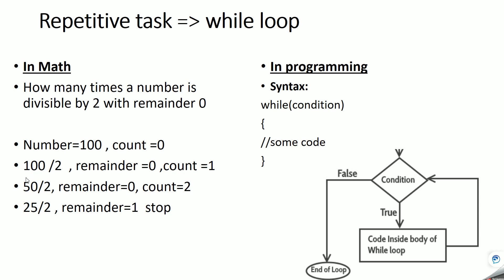Finding the remainder as 0 and dividing by 2 was a repetitive task — we were doing the same kind of task each time. To achieve this similar kind of task happening again and again, in C programming we have a concept called the while loop.